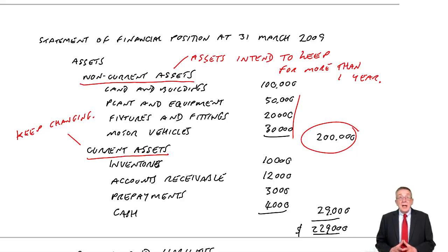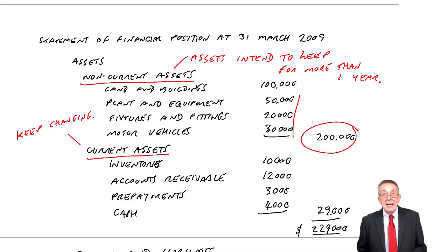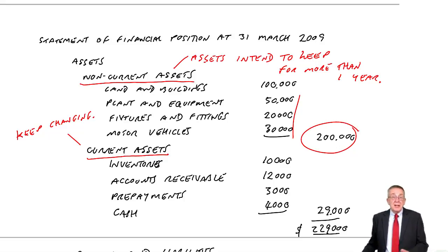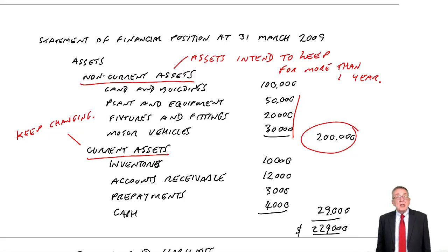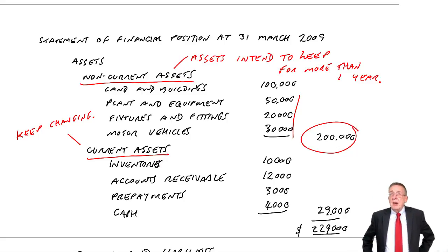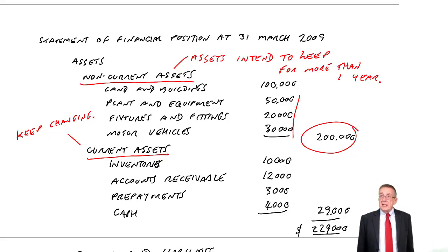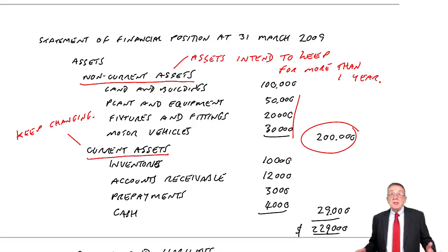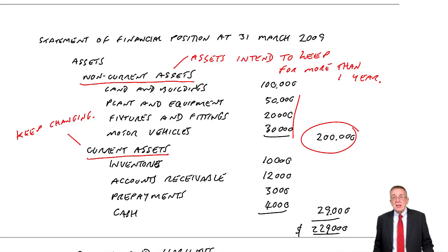The one I jumped over — prepayments. I don't want to go into great detail here because it's a topic on its own, and you'll see there's a later chapter on prepayments. But essentially, what it is: I pay insurance on my car. The way I pay it, I have to pay, let's say, $1,200 — but I have to pay for a whole year at the beginning of the year.